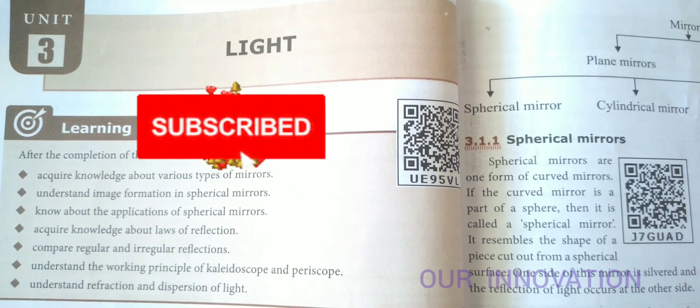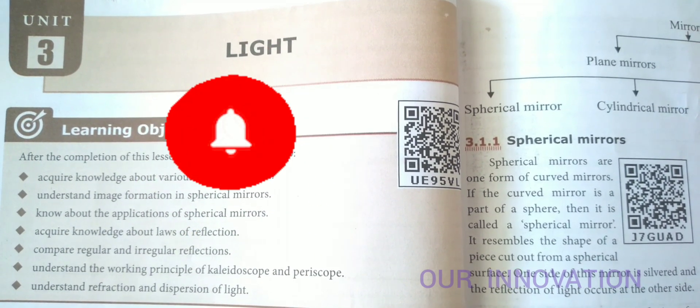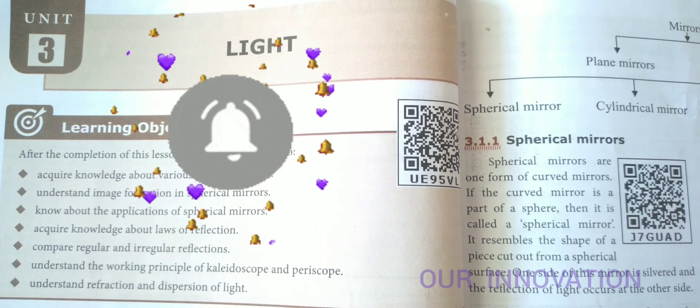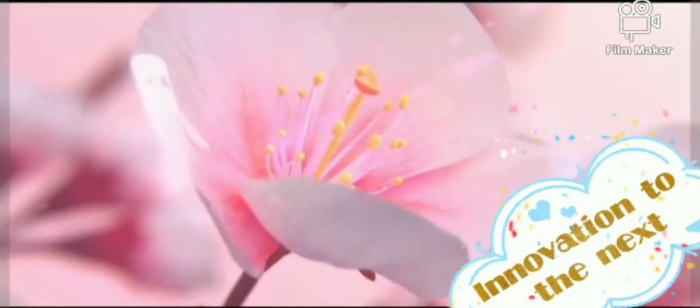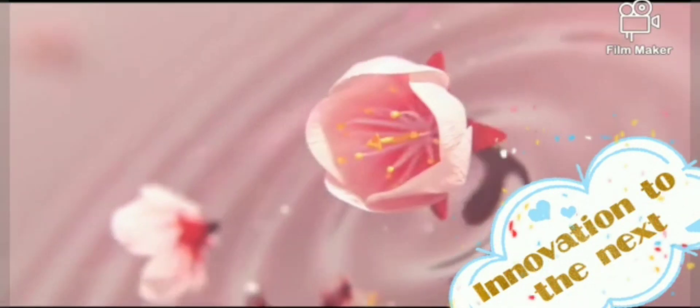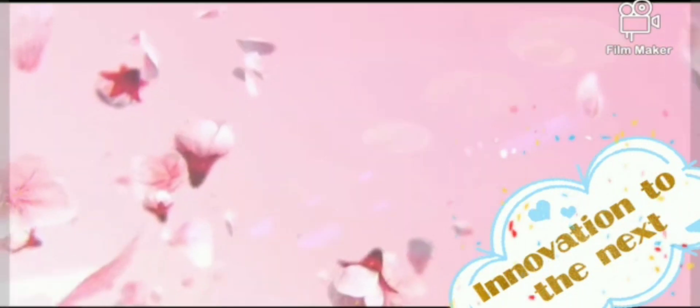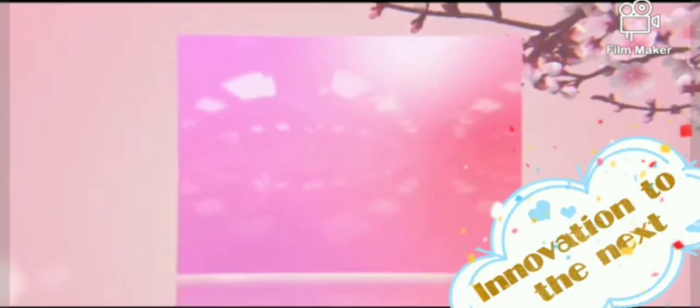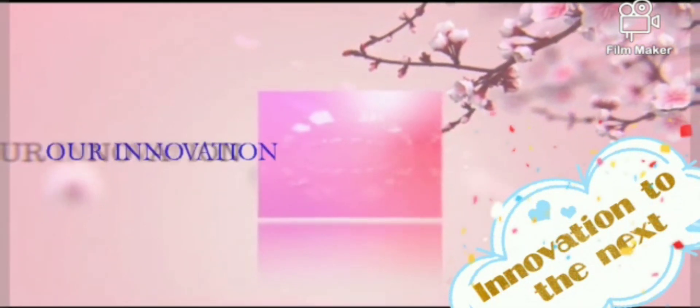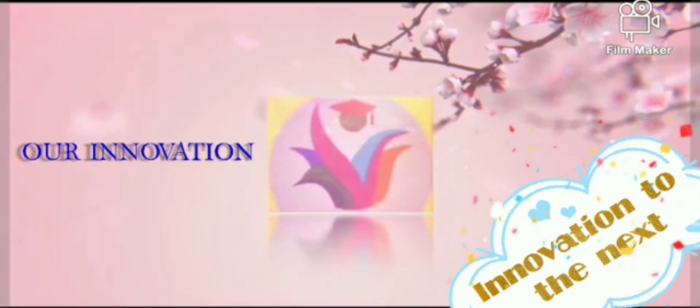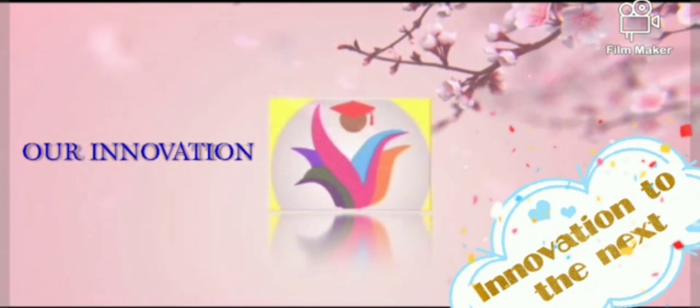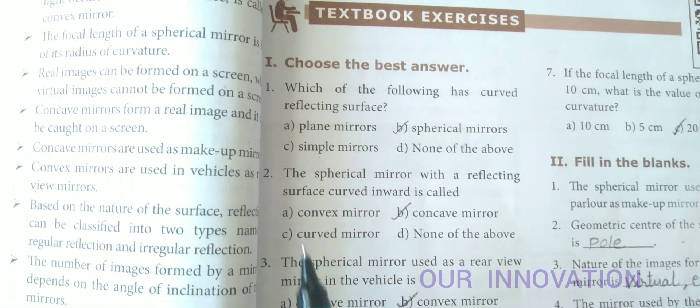Hi, welcome to Innovation Channel. This is 8th grade science, Unit 3 on Light - Book Evaluation. We'll be covering the textbook exercises, starting with Roman numeral 1.